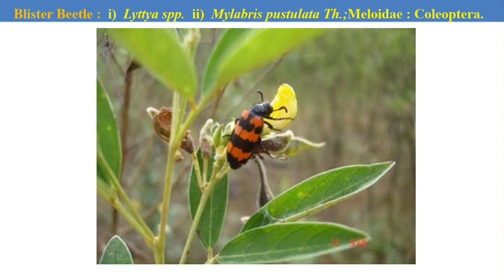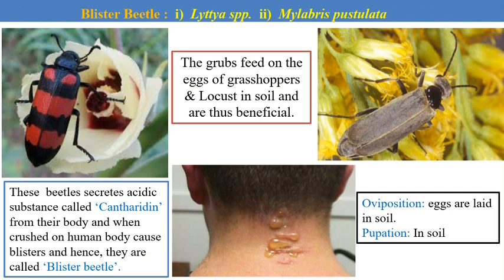The next pest is the flower feeder — the blister beetle. There are two major species: Lytta species and Mylabris pustulata. It is a coleopteran pest with four different life stages: egg, grub, pupa and adult. The female beetle lays eggs inside the soil; after hatching, the grubs emerge and are also present in the soil. One major characteristic is that the grub of the blister beetle is beneficial in nature because it feeds on the eggs of grasshoppers and locusts in the soil. Hence, only the adult is the damaging stage which infests the crop plant.